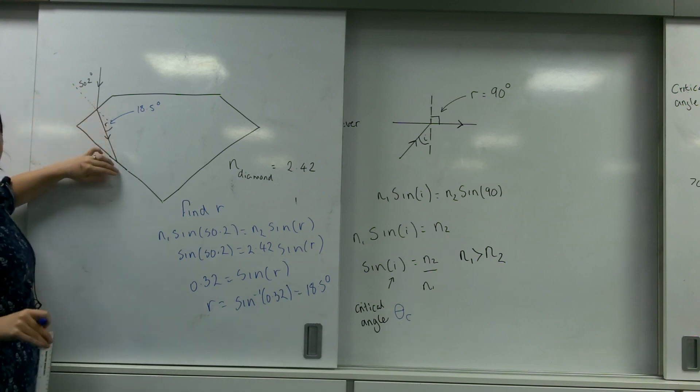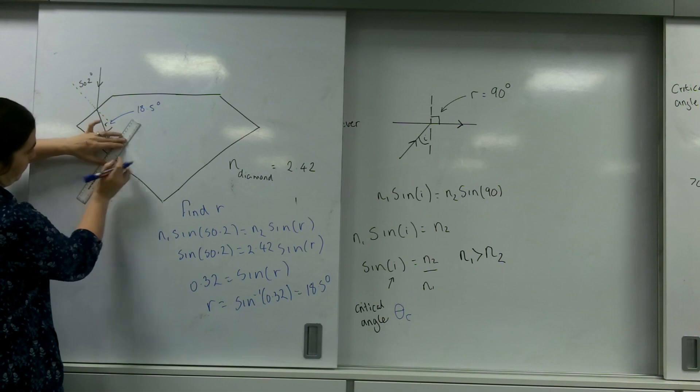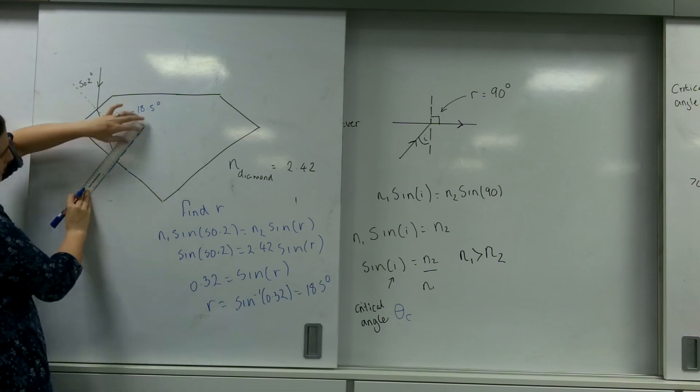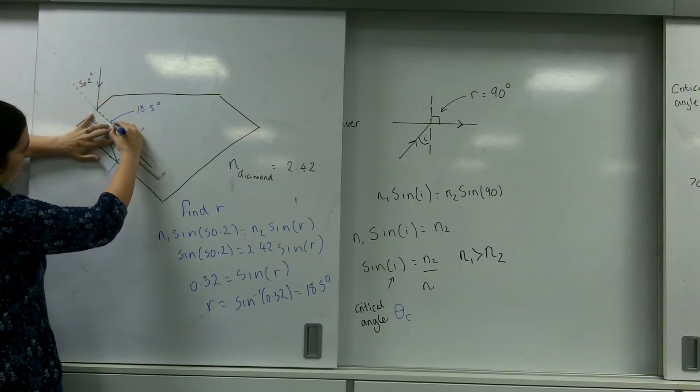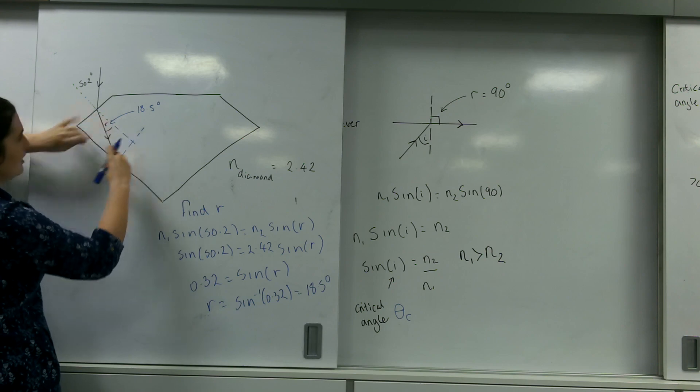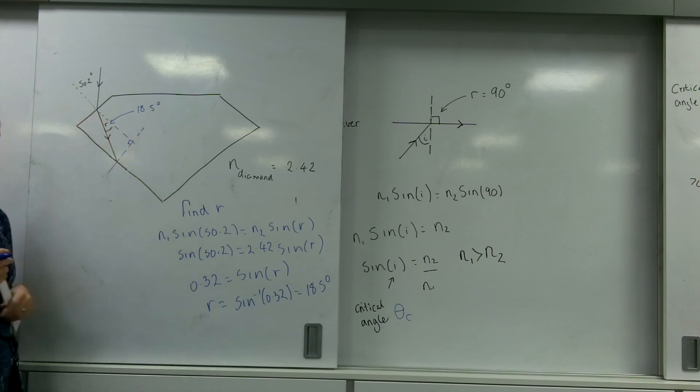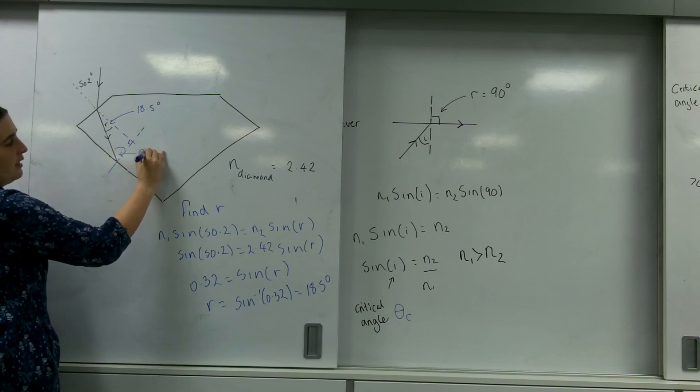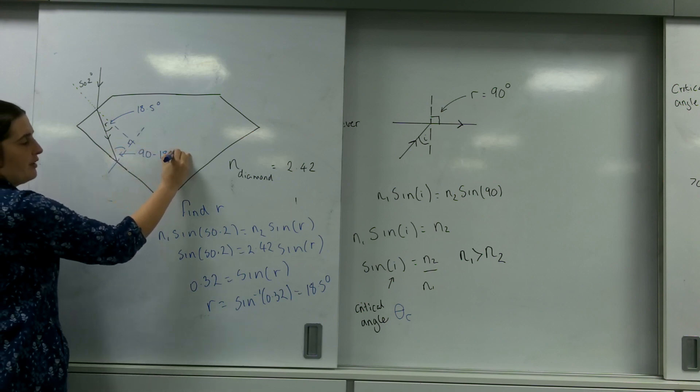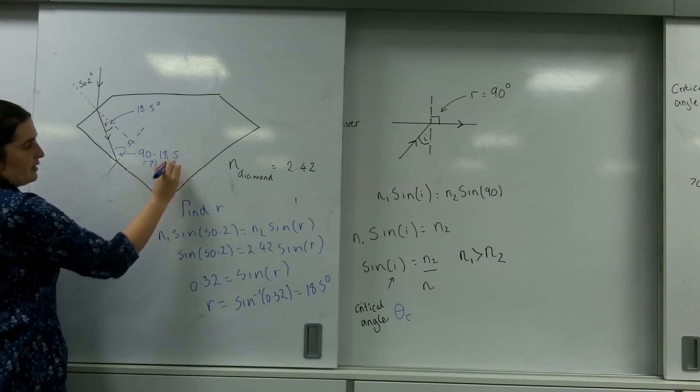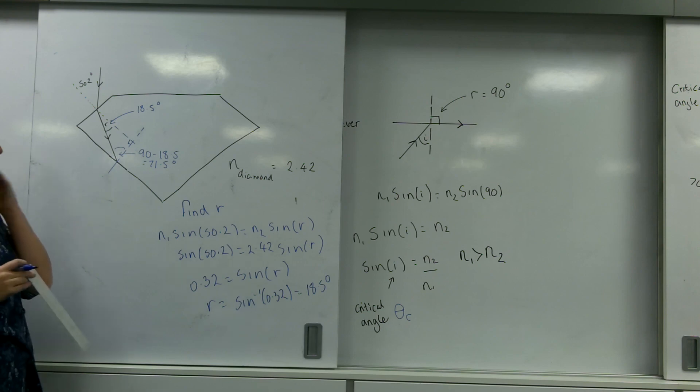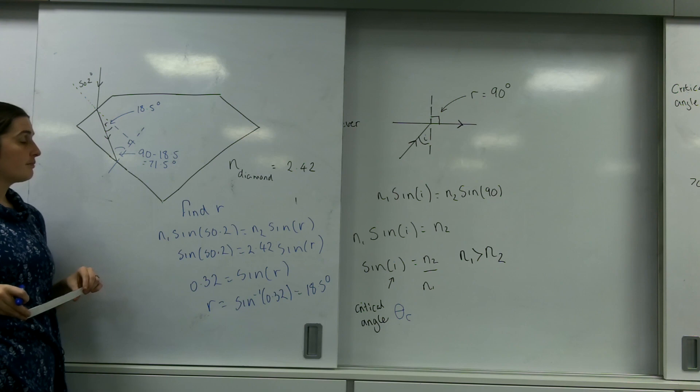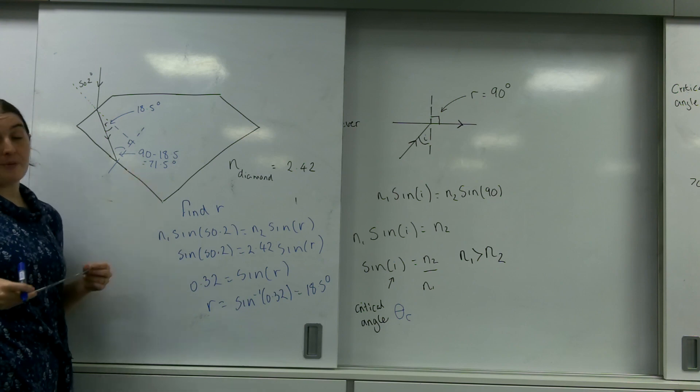This light is coming down, and it's going to hit this surface here. And if I draw a normal line like this, and I marry it up with this normal line, I get a nice right angle. So this angle here is going to be 90 minus 18.5, which is 71.5 degrees. Now, if my critical angle for this diamond is smaller than that, I will reflect.